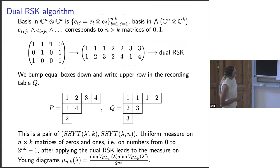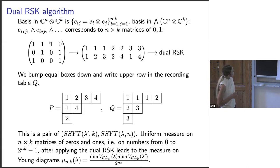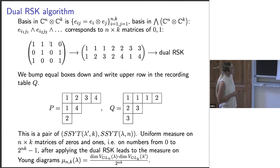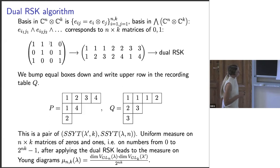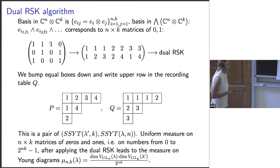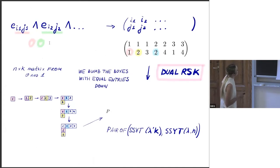For skew-Howe duality, the relevant algorithm is the dual RSK. We can have a matrix of zeros and ones parameterizing the basis vectors of the exterior power of C^n ⊗ C^k, since in the exterior algebra basis vectors are indexed by sets of positions. We can write this as a two-row array by looking at positions of the ones, and then apply the dual RSK algorithm.